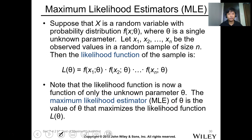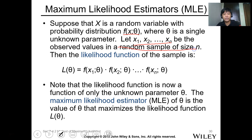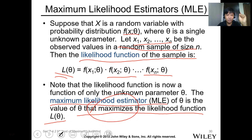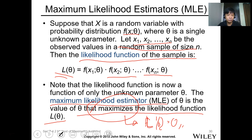Now, the maximum likelihood estimator, or MLE. Suppose x is a random variable with probability distribution f(x, theta), where theta is a single unknown parameter. Let x1 to xn be observed values in a random sample of size n. The likelihood function L(theta) equals f(x1, theta) times f(x2, theta) and so on. The likelihood function is a function of only the unknown parameter theta. The MLE of theta is the value that maximizes the likelihood function, found by setting the first derivative L'(theta) equal to zero.